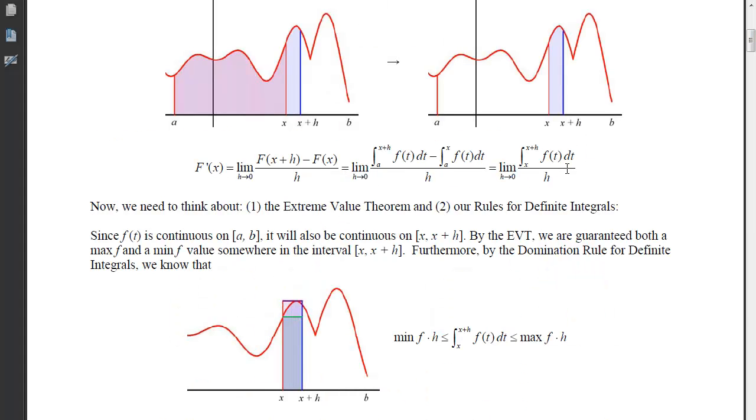So now in order to continue with this, we need to think about two things. We need to think about the extreme value theorem, and we need to think about our rules for definite integrals. Since little f is continuous on the closed interval, it's going to be continuous from x to x plus h. And by the extreme value theorem, we are guaranteed both a max and a min somewhere in that closed interval.